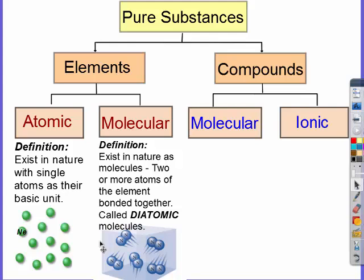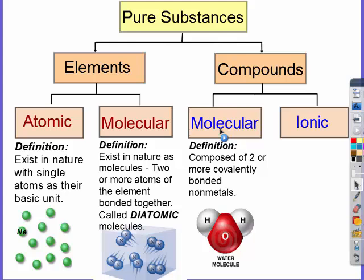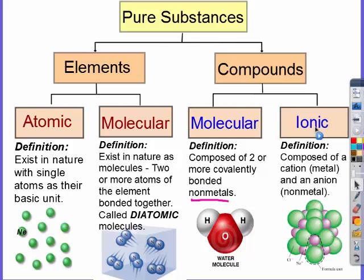Compounds can be molecular or ionic. Molecular compounds are composed of two or more covalently bonded nonmetals. While ionic are composed of a cation, which is our metal, and an anion, which is our nonmetal. So ionic simply is a metal and a nonmetal. Notice there's two different types of atoms and in this one there's two different types of atoms.